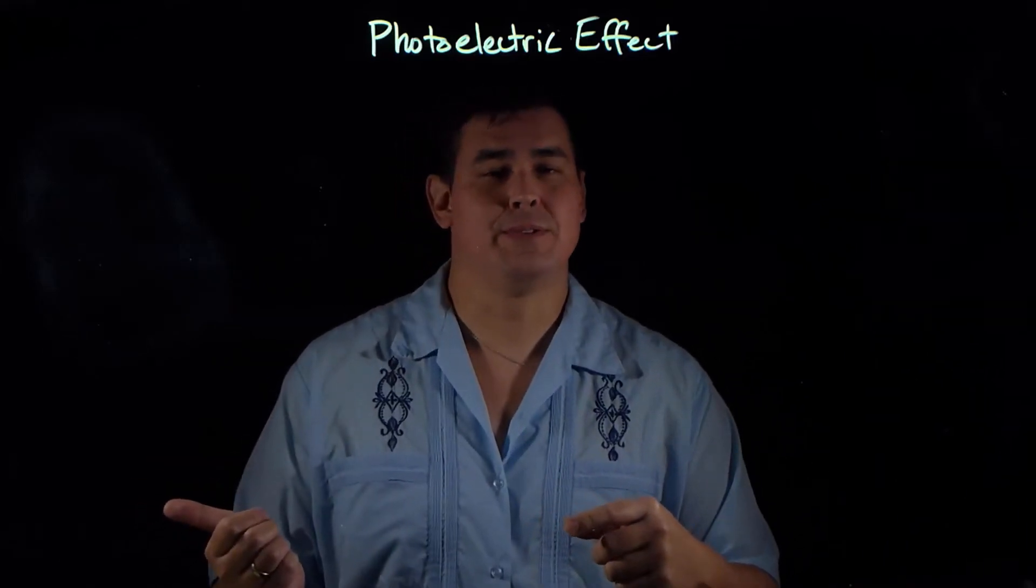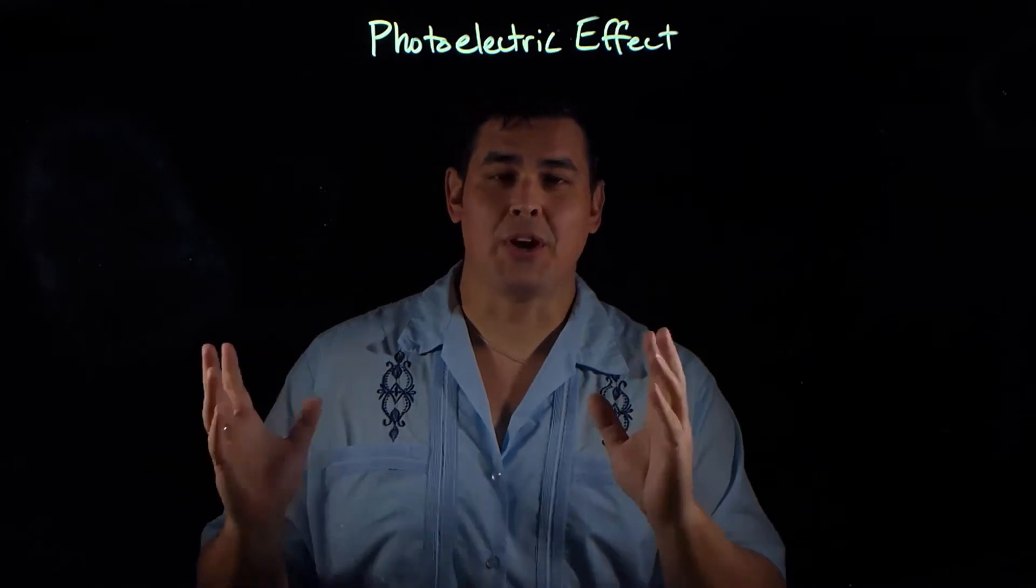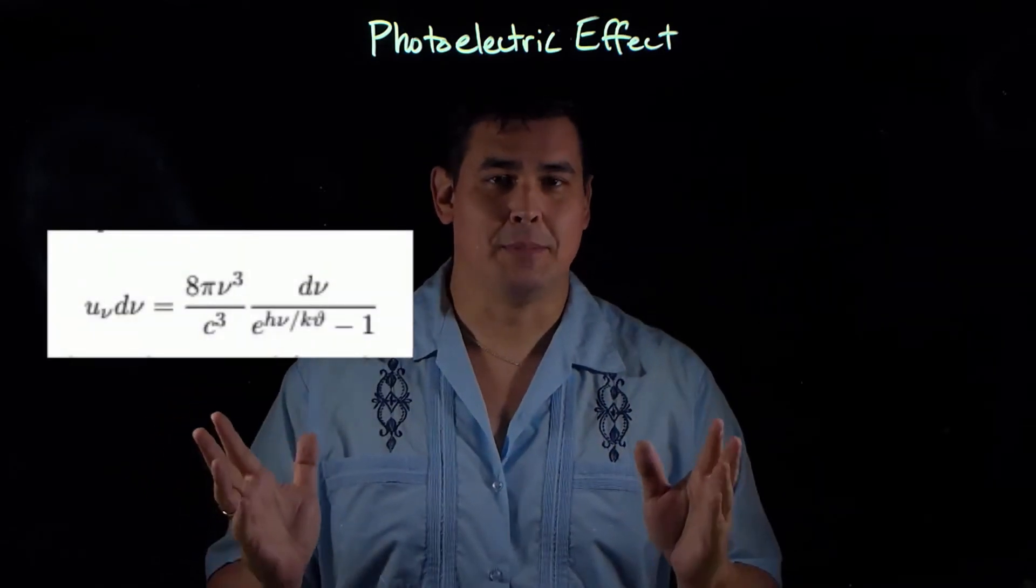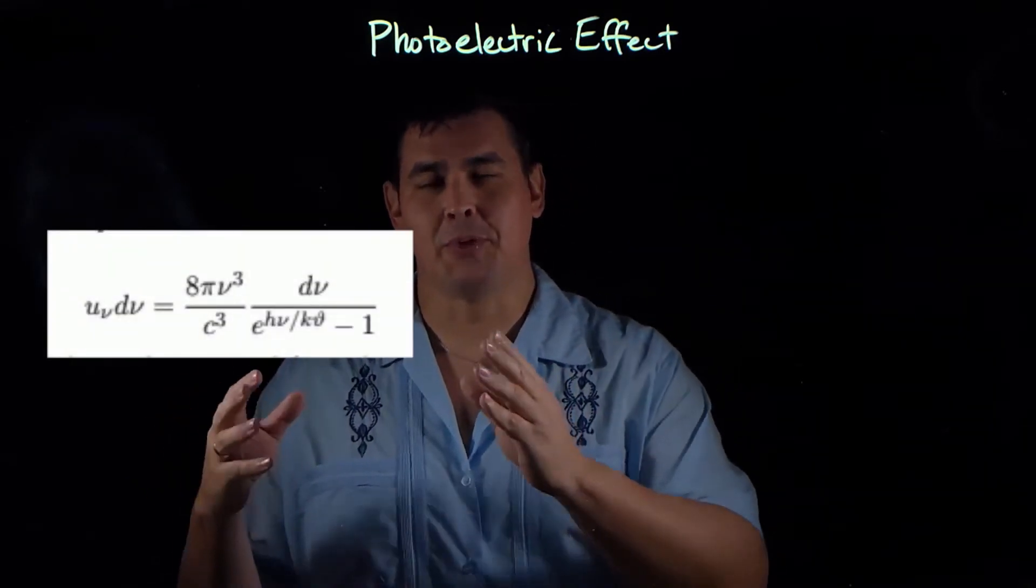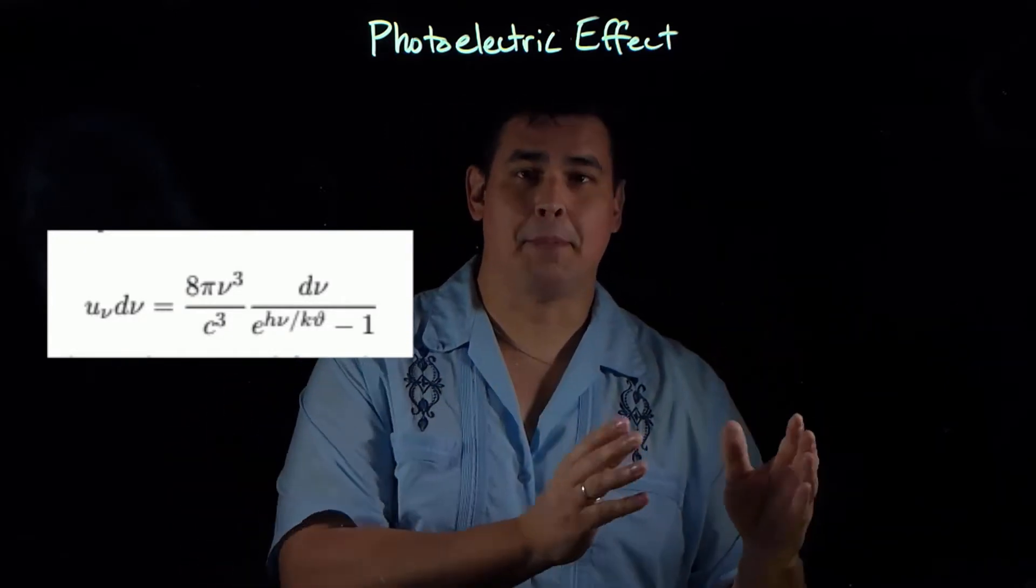So let's pick up where we left off in the last video. The year's 1901, and Max Planck has come up with an equation that solves the problem for what's the relationship between the intensity of emitted radiation and the wavelength and the temperature.